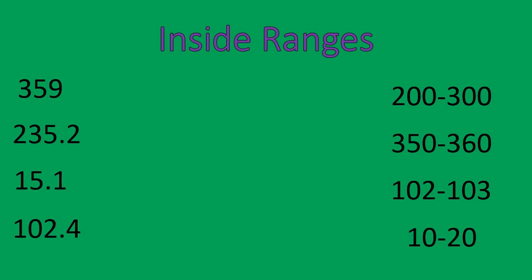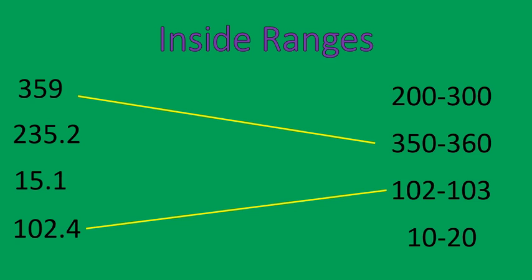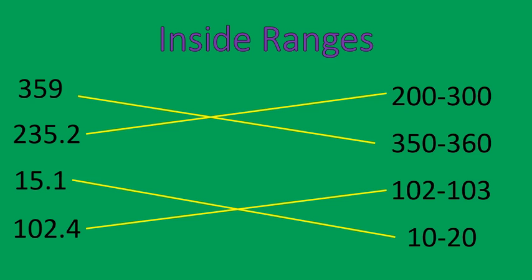We have numbers now and we have to figure out where they fit. 359 — where does it fit inside these groups of numbers? It doesn't fit between 200 and 300, or between 102 and 103, but it fits right there between 350 and 360. 102.4 fits between 102 and 103. 15 fits between 10 and 20. And 235 fits between 200 and 300. Being able to identify where numbers fit in between different groups is a really good first step for rounding.